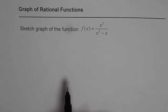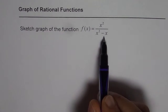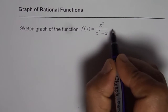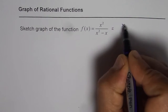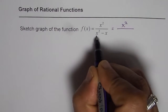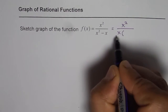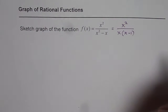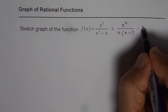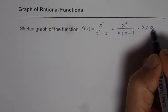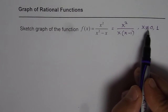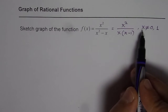It is always a good idea to factor the rational function so we can look into the discontinuities. We can write f(x) as x² divided by x(x minus 1), since x is a common factor in the denominator. This clearly indicates that x cannot be equal to 0 or 1, giving us possible discontinuities.